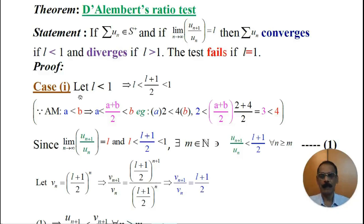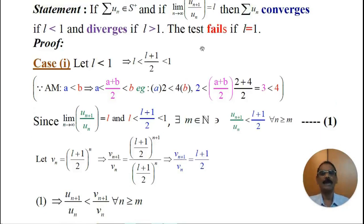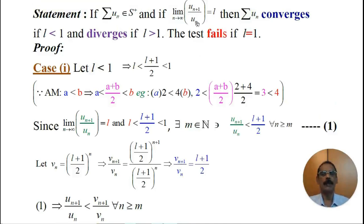Therefore, by the arithmetic mean, since L is less than 1, its arithmetic mean, namely (L + 1)/2, must lie between L and 1. That is, L < 1 implies L < (L + 1)/2 < 1. Since we are given that the limit of Uₙ₊₁ by Uₙ as n tends to infinity is L, and L is less than (L + 1)/2, which is less than 1.